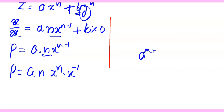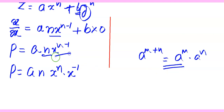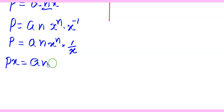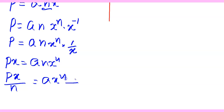Using the exponent rule a^(m+n) = a^m · a^n, we can write x^(n−1) as x^n · x^(−1) = x^n / x. So p = a·n·x^n/x. On cross multiplying, px = a·n·x^n, and therefore px/n = a·x^n. This is equation 1.